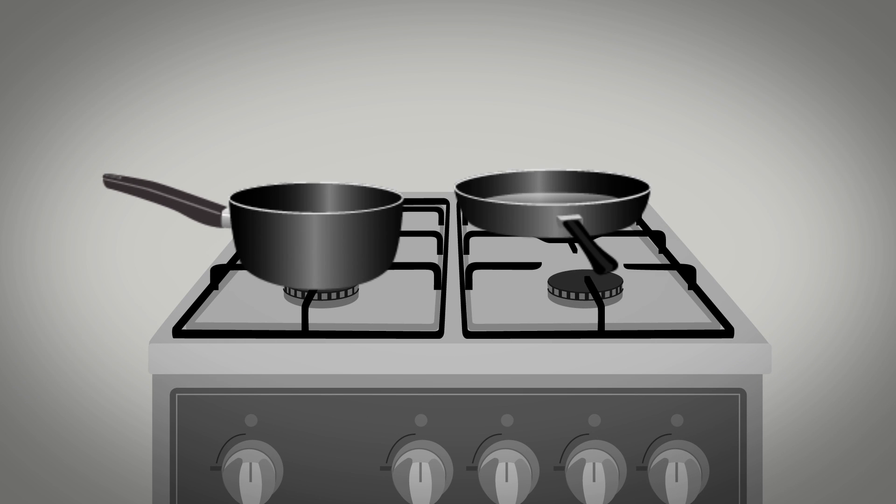Whatever material the handle is made from, it's important to remember to position pan handles away from the direct heat from the hob. Subject to heat like this, any material will eventually become too hot to hold.